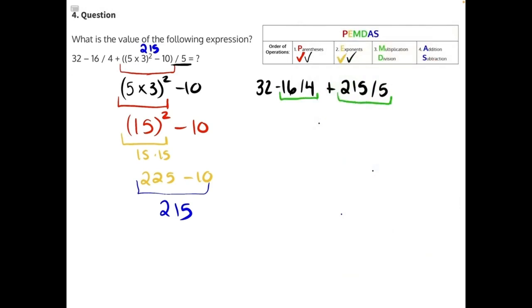16 divided by 4 will give us 4. 215 divided by 5, you can set up a little long division here. 5 goes into 21 four times with 1 left over. 5 goes into 15 three times with no remainder, making 43 the result.